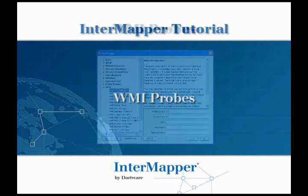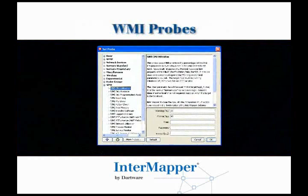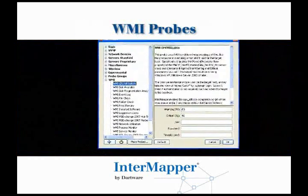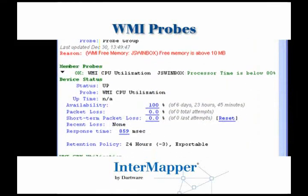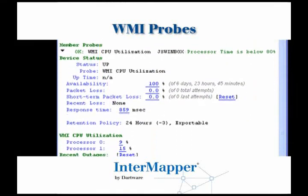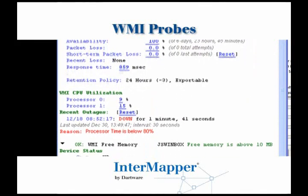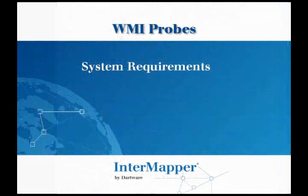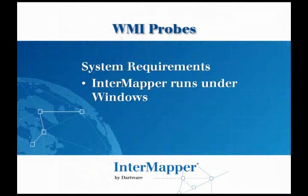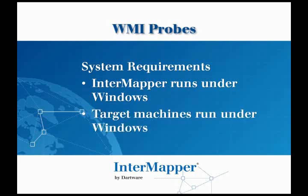Use InterMapper's WMI probes to get detailed information from Windows workstations and servers through the Windows Management Instrumentation interface. All WMI probes require that InterMapper's server is installed on a Windows machine with access to the target hosts, all of which must be running a version of Windows. Check each probe's description for system requirements.